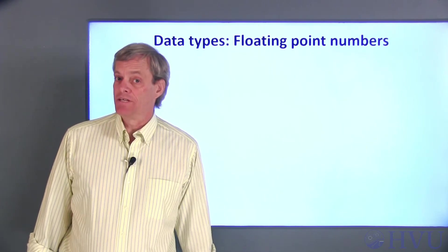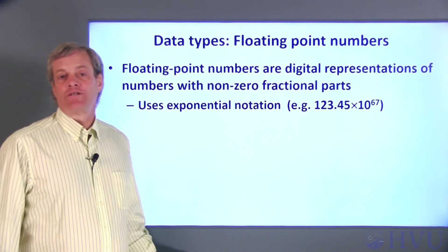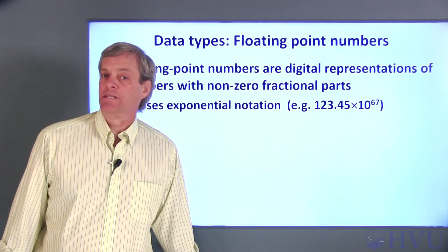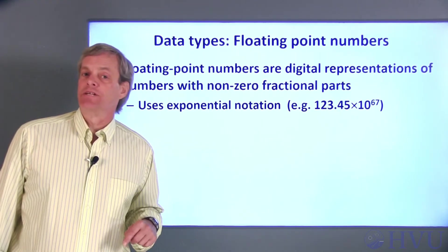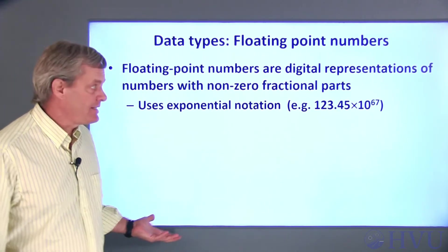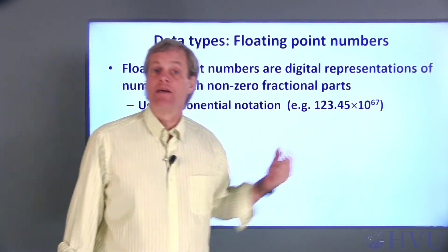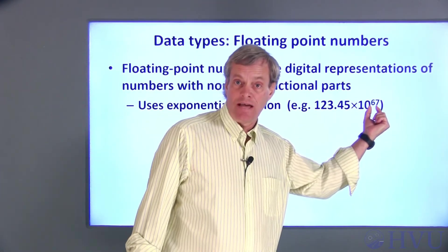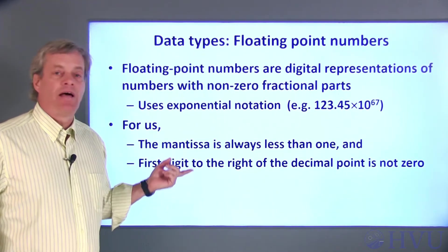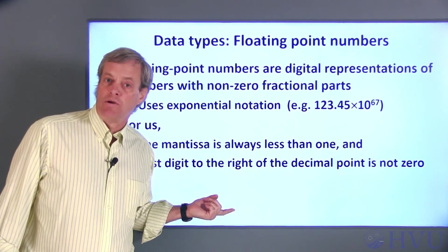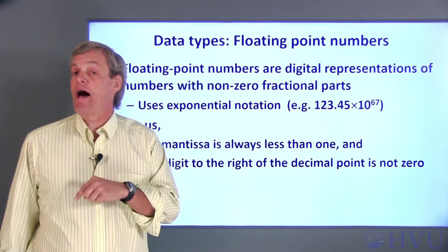The other main data type used in MATLAB to represent numbers is floating point. Floating point numbers have non-zero fractional parts, like pi or 14.75. They're always represented in terms of exponential notation, which has a mantissa, in this example that's 123.45, and an exponent, 67 in this example. In MATLAB, the mantissa must be represented by a number that is between 0 and 1, with the first digit to the right of the decimal place not being a zero.